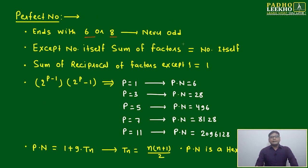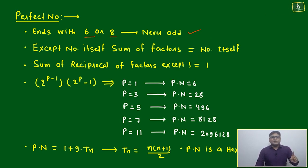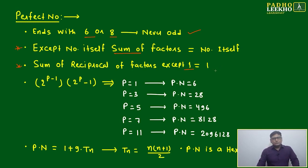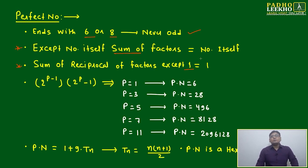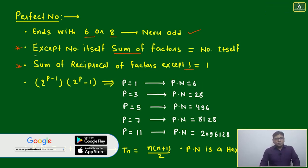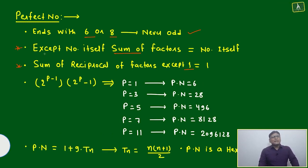Let's understand: what is a perfect number? A perfect number always ends with six or eight — it will never be odd, it will always be even, and it will not end with four or two. Except for the number itself, the sum of its factors will always equal the number itself. Also, the sum of the reciprocals of all factors except one is always equal to one. These are properties you may have used while solving questions without knowing they belong to perfect numbers.